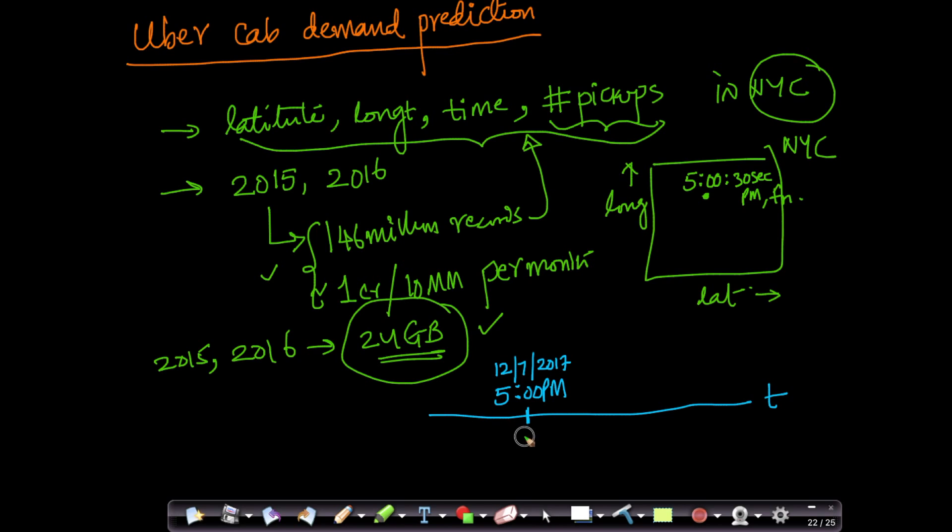Let's assume at 5 p.m. we are at time T. Now imagine if I'm an engineer at Uber. What is one of the important things that I need to do as part of Uber? I need to ensure that at any given point in any given city we have enough number of cabs available for customers to pick up.